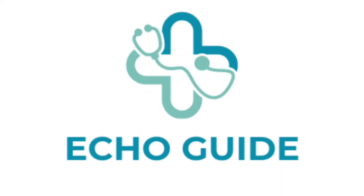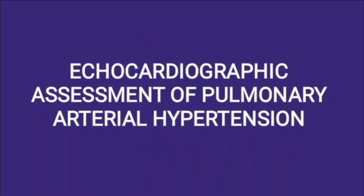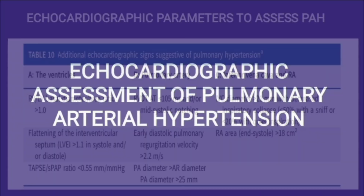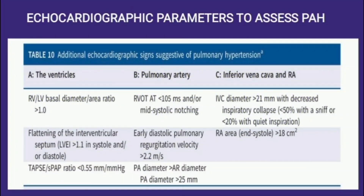Hello everyone, welcome back to my channel. Today we'll be learning about the echocardiographic assessment of pulmonary arterial hypertension. As you can see in the table, all the echo parameters and measurements are mentioned that we need to assess while doing echo of a patient with suspected pulmonary hypertension. We will start with the assessment of the pulmonary artery first, then move forward to the other parameters.